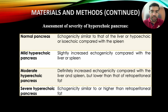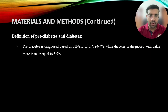Assessment of severity: normal pancreas has echogenicity similar to the liver or is hypoechoic or isoechoic compared with the spleen. Mild hyperechoic pancreas is defined as mild increase in echogenicity compared with the liver. Moderate hyperechoic pancreas is definitely increased echogenicity compared with the liver and spleen but less than the retroperitoneal fat. Severe hyperechoic pancreas is defined as echogenicity similar to or higher than retroperitoneal fat. Pre-diabetes is diagnosed with HbA1c of 5.7 to 6.4, while diabetes is diagnosed with a value of 6.5 or greater.